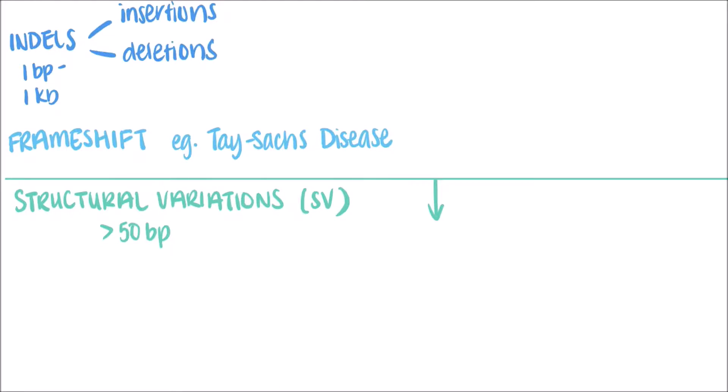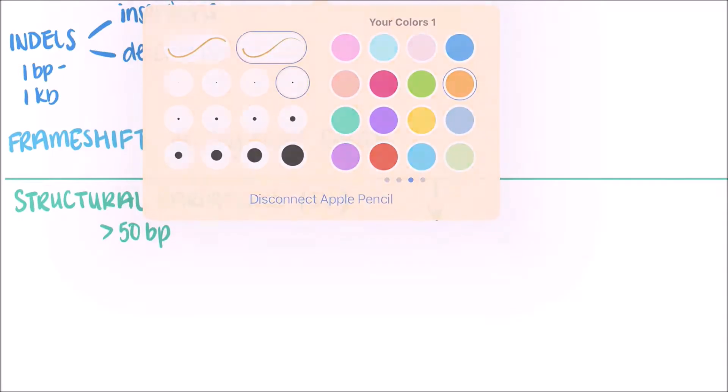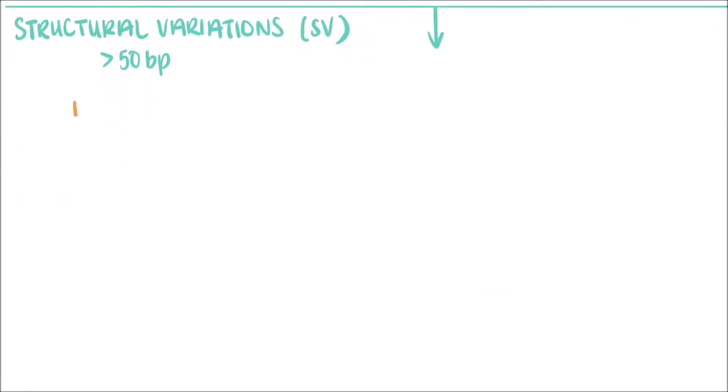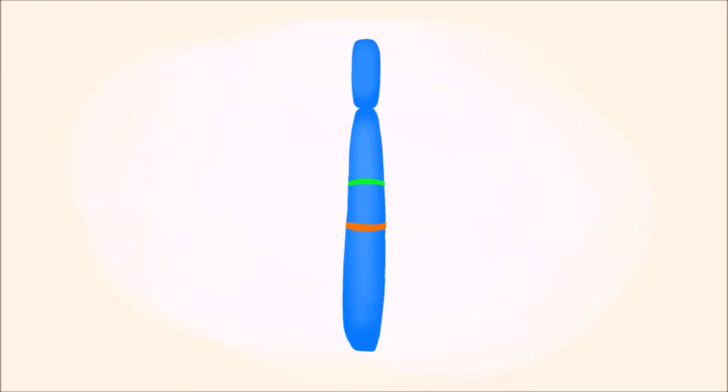A few other types of variations include inversion, translocation, and duplication. Inversions occur when a region of chromosome breaks off then rejoins after having flipped upside down. For instance, on this chromosome, there is a region flanked by a green band at the top and an orange band at the bottom. An inversion would mean that this section breaks off and turns 180 degrees before rejoining. You can see that now the green band is at the bottom and the orange band is at the top.